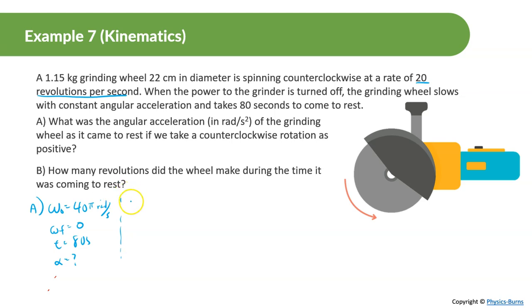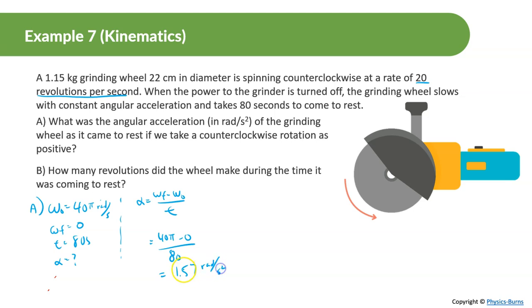Using alpha equals omega final minus omega initial divided by time: that's 0 minus 40 pi divided by 80, which equals negative 1.57 radians per second squared. It should be negative because the wheel is decelerating — omega initial is 40 pi, omega final is zero, so the result is negative 1.57 radians per second squared.